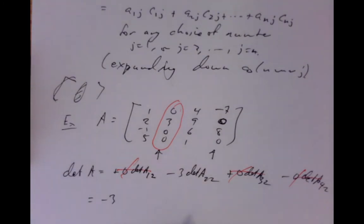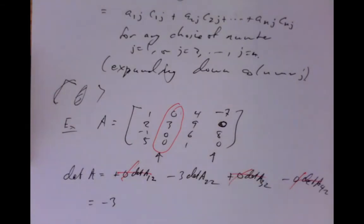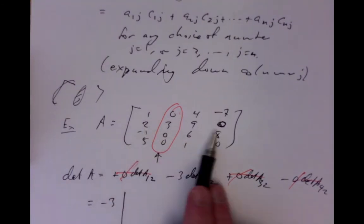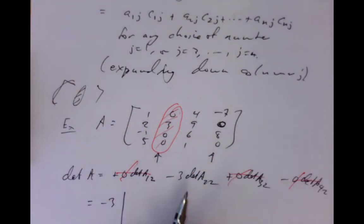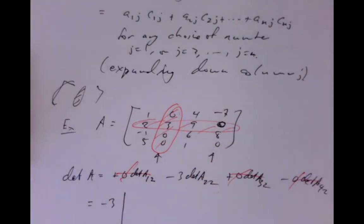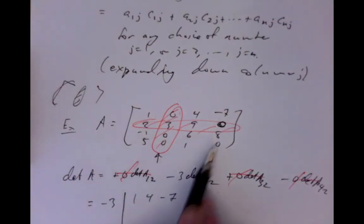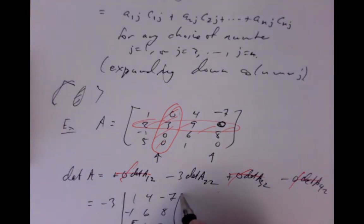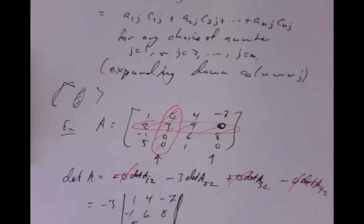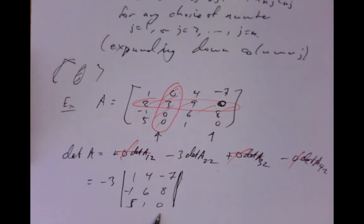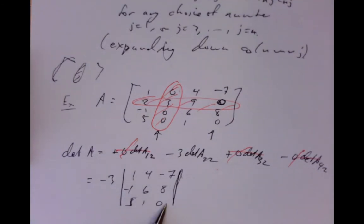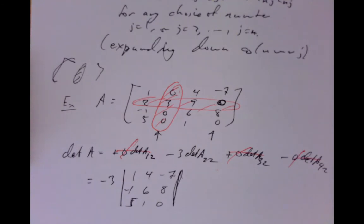It becomes just minus 3 times the determinant of what you get by deleting that row and column — leaving the 3x3 matrix with entries 1, 4, -7 / -1, 6, 8 / 5, 1, 0. At this point, we'd want to pick either that column or that row because there's a zero there, leaving only two entries to worry about. Because there's a zero, you have a good chance of calculating it without too much trouble.